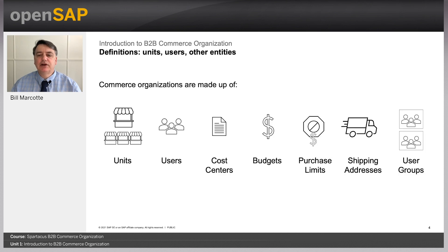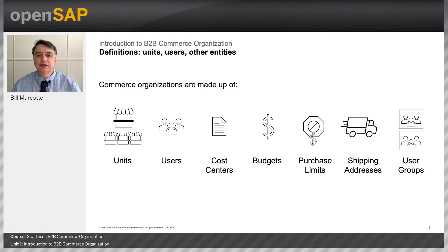Some of the terms you're going to hear during the course are important to understand. Units are considered the basic building block of commerce organizations. A unit can represent pretty much anything you want in your organization — it could be a store, department, group of people, a city, or a country. You organize your unit hierarchy however you want — for example, starting with a country, then regions, then cities, then stores in those cities, then departments.